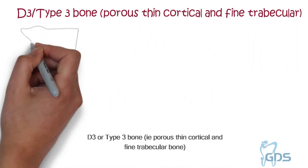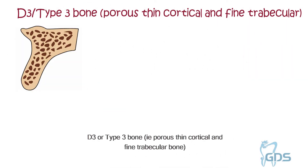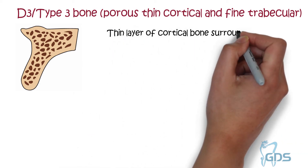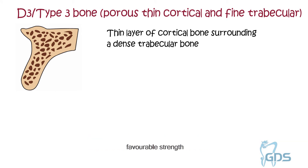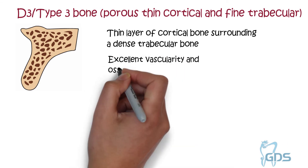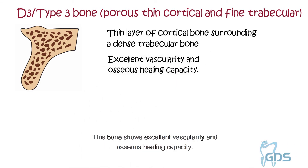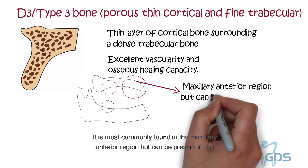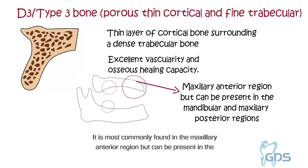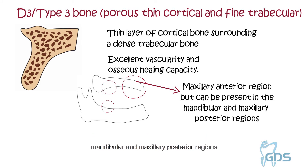The third type is D3, or type 3 bone, i.e. porous thin cortical and fine trabecular bone. This bone quality shows a thin layer of cortical bone surrounding a dense trabecular bone of favorable strength. This bone shows excellent vascularity and osseous healing capacity. It is most commonly found in the maxillary anterior region but can be present in mandibular and maxillary posterior regions.